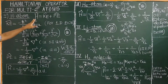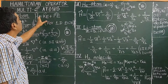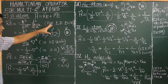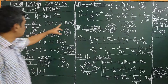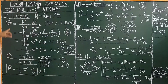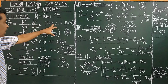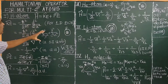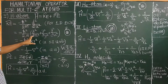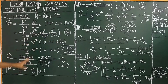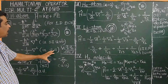For the hydrogen atom, the Hamiltonian operator is the sum of the kinetic energy operator and the potential energy operator. For a one-dimensional box, the kinetic energy operator is minus h-bar squared divided by 2m times d²/dx². For a particle in a three-dimensional box, it is minus h-bar squared divided by 2m times the Laplacian operator del-squared. This is in terms of SI units.